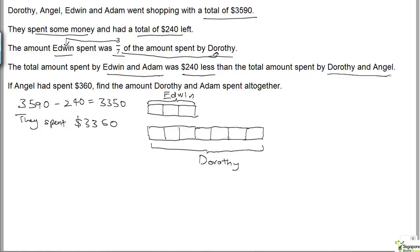Now, the total amount spent by Edwin and Adam was $240 less than the total amount spent by Dorothy and Angel. So Angel must have been represented here — let this be Angel. The most important thing to note is that Edwin and Adam together spent $240 less than Dorothy and Angel together.